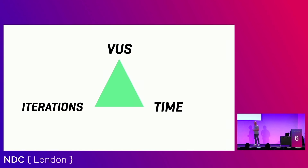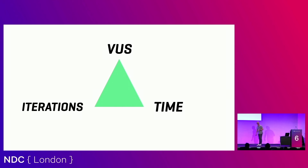There's something important to explain, and it's representative of a cap theorem-like triangle. You can choose two out of three values, and the third is the variable. The three things are: virtual users, time, and number of iterations. If you focus on iterations and time, then virtual users is the variable. If you guarantee iterations and virtual users, time is the variable. If you set virtual users and time, the number of iterations will be variable. You can only choose two — keep that in mind when we talk about execution scenarios.